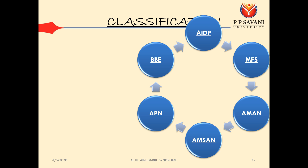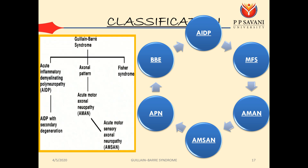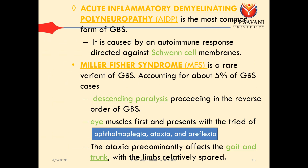The classification of GBS includes: AIDP (acute inflammatory demyelinating polyneuropathy), AIDP with secondary axonal degeneration, axonal motor neuropathy (AMAN), axonal motor-sensory neuropathy (AMSAN), Miller-Fischer syndrome, and acute motor sensory axonal neuropathy. AIDP is the most common type of GBS and is caused by an autoimmune response directed against Schwann cell membranes — only the Schwann cell membranes are involved.